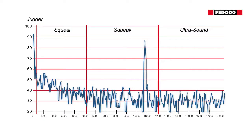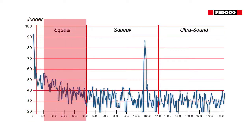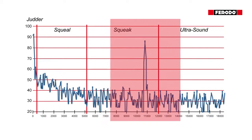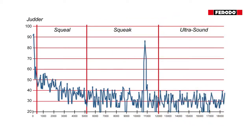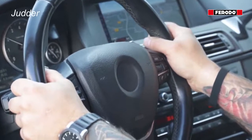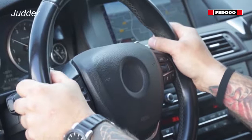Brake vibrations can occur at different frequencies, and for different frequencies we have different names. Below 300 Hz it is called judder; with higher frequencies we call it squeal, squeak, or ultrasound, which cannot be heard. All vibrations are resonances at the natural frequency of the brake system. Most people are aware that brake squeal or squeak are caused by vibration.